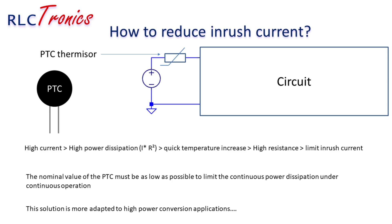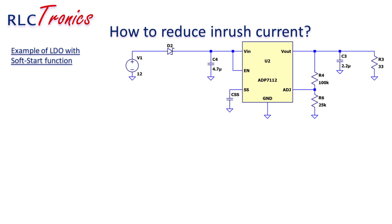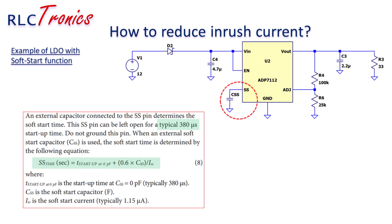When the inrush current sequence is finished, the PTC cools down, its resistance gets back to the nominal value, and the steady-state current continues flowing to the load safely. If you are using a voltage regulator IC, most of those regulators have a feature that allows you to control the rise time of the output voltage. This function is called soft start. By calculating the value of a small capacitor that you place at the soft start pin, you can adjust by hardware the rise time, resulting in good control of the inrush current.